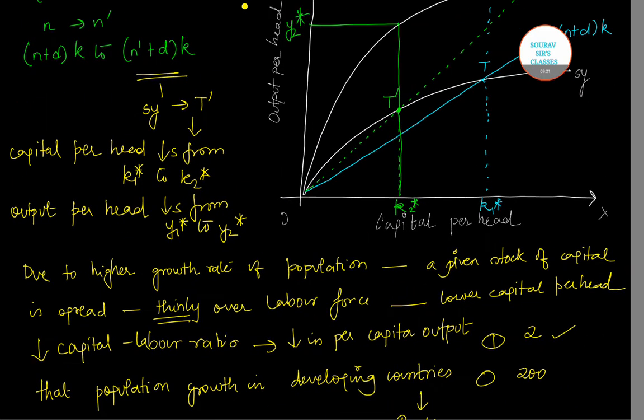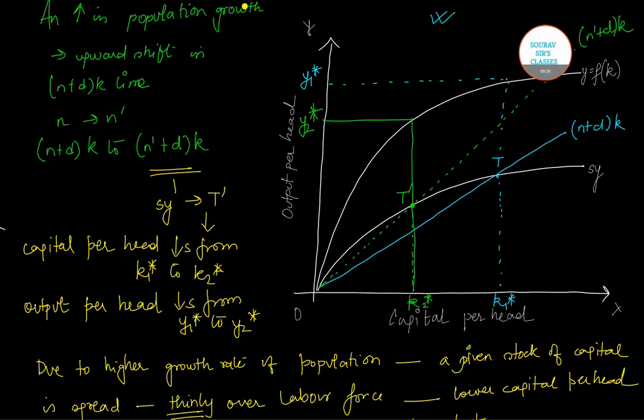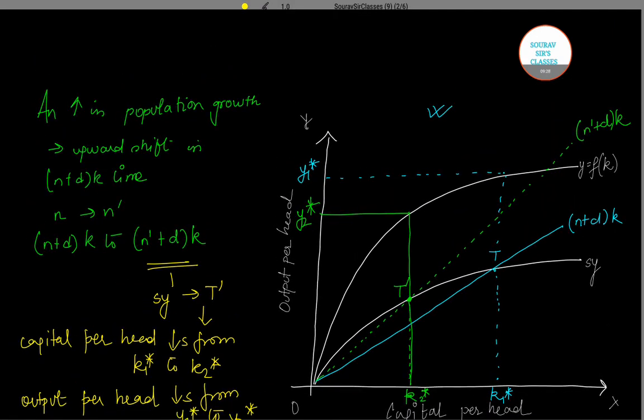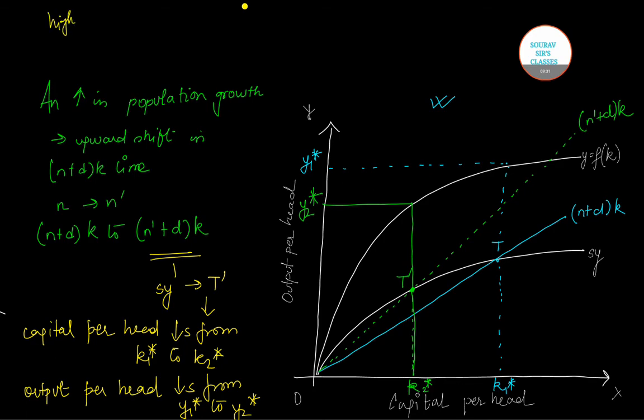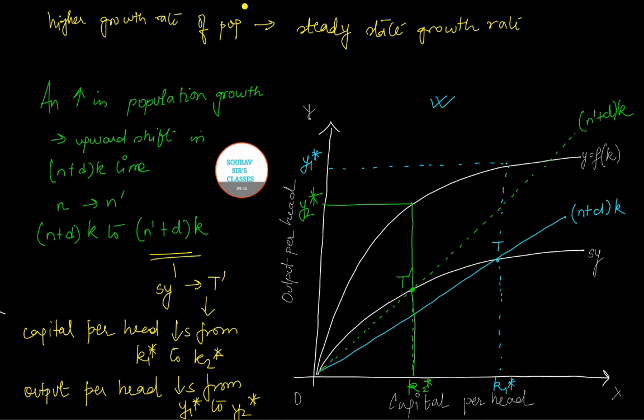One more interesting thing that you can note down here is that this figure also shows us that a higher growth rate of population has actually raised the steady state growth rate. So the steady state growth rate has actually risen to n', which is equal to the new growth rate of population. However, what you can note is that this higher steady state growth rate is not desirable.